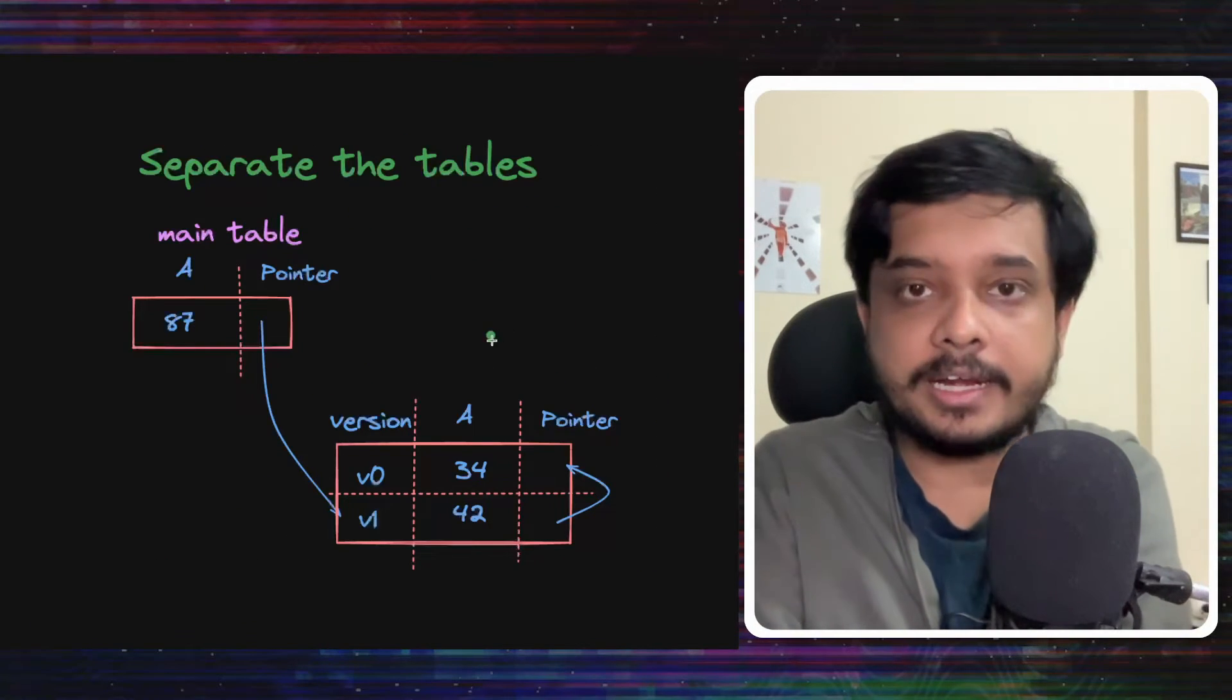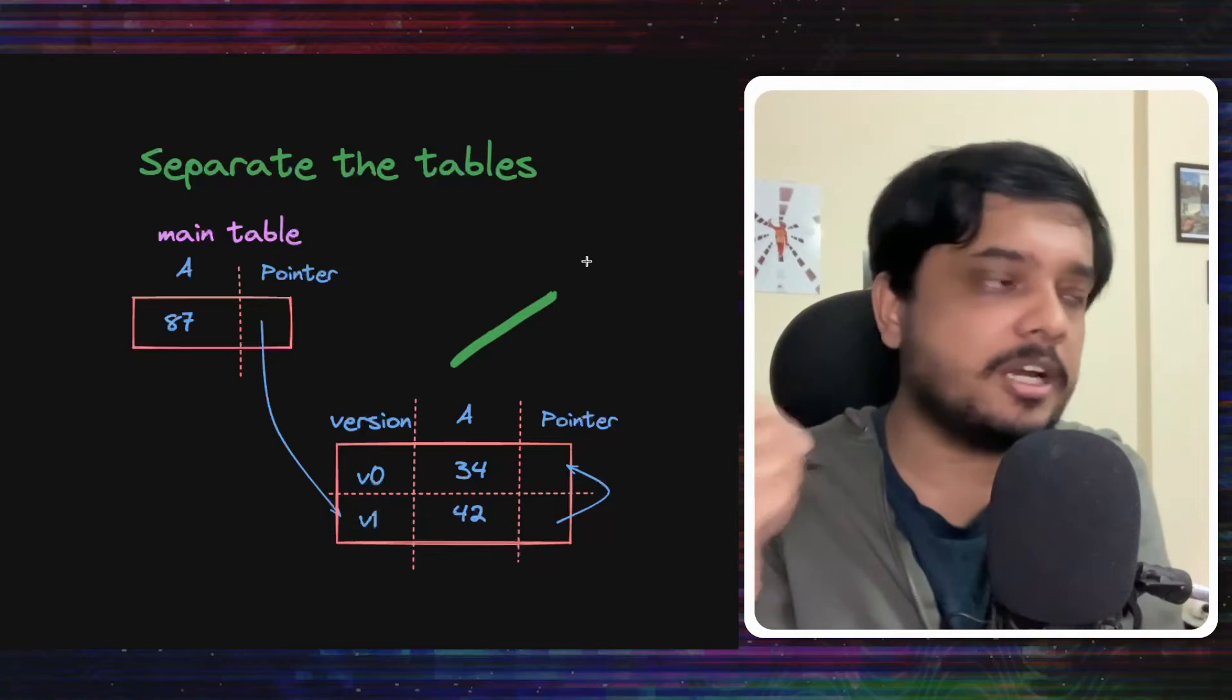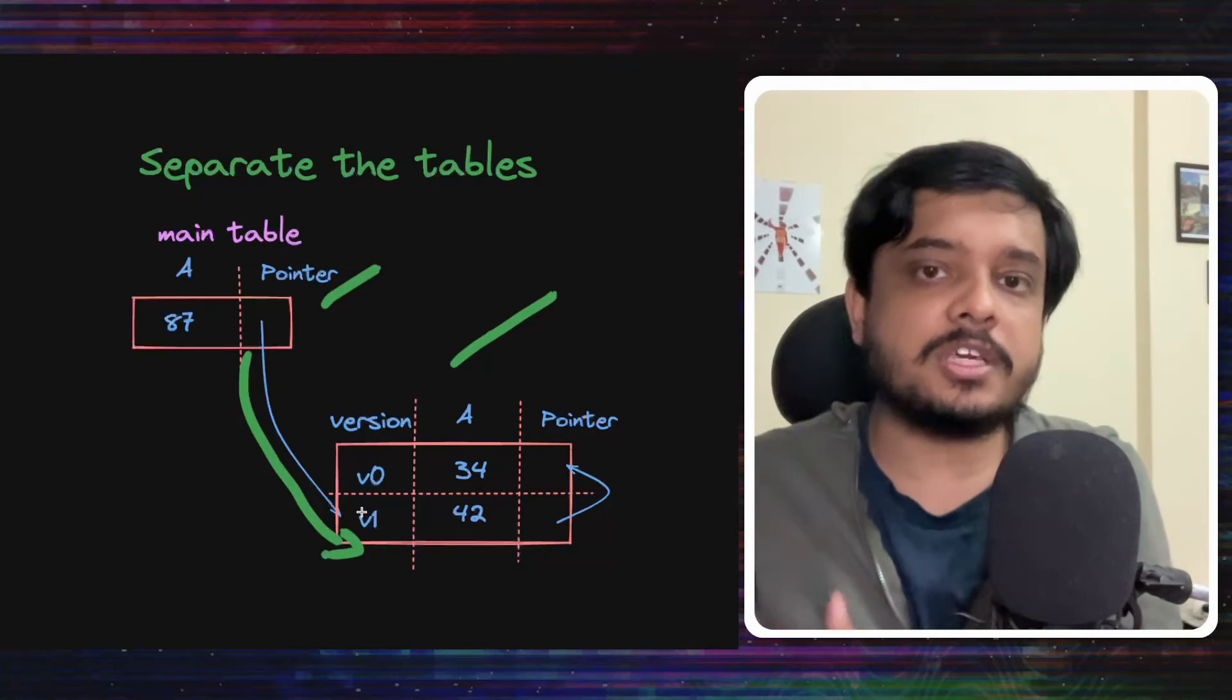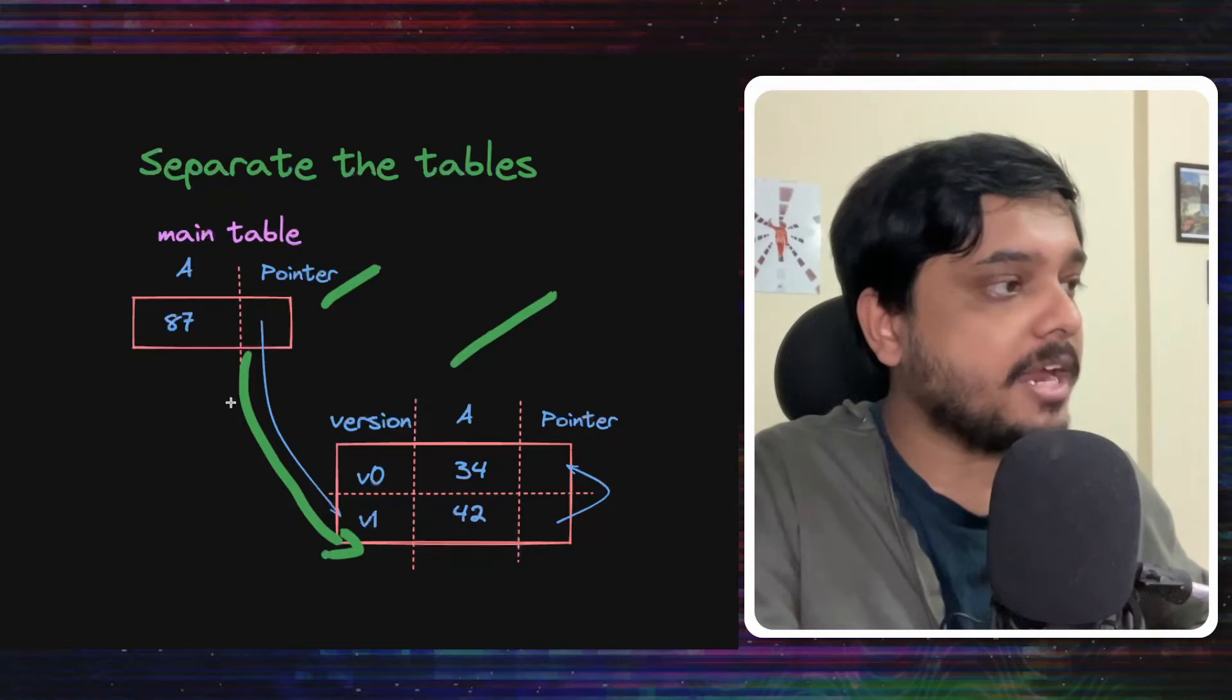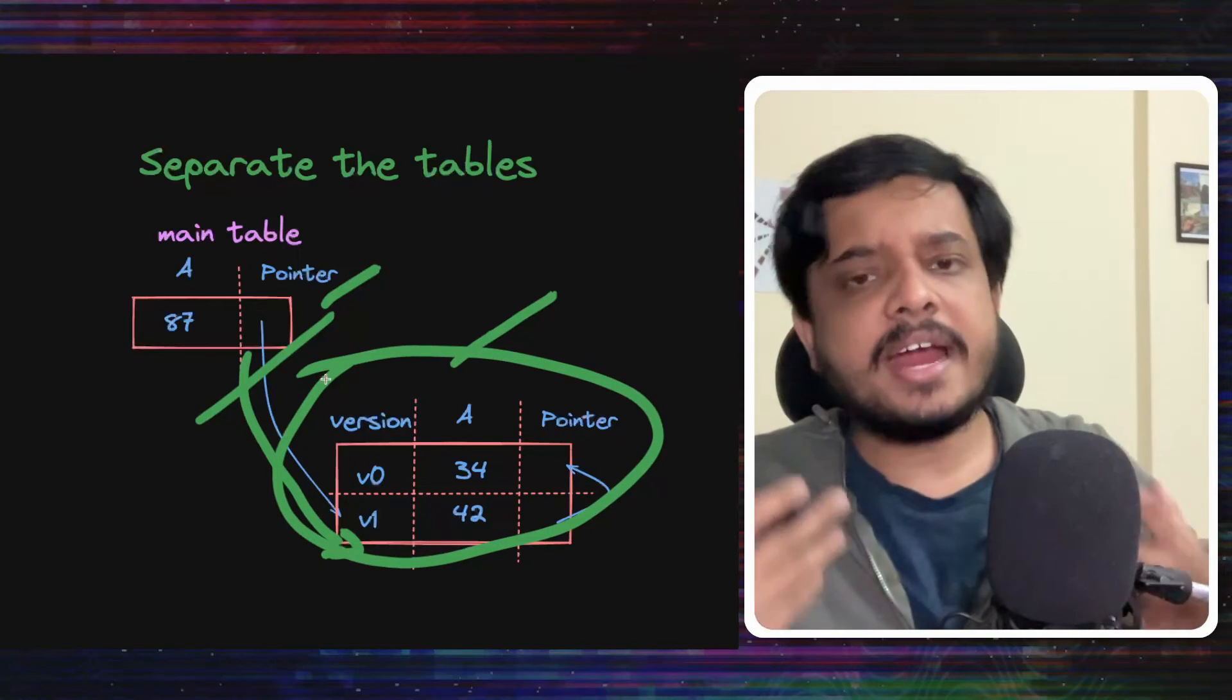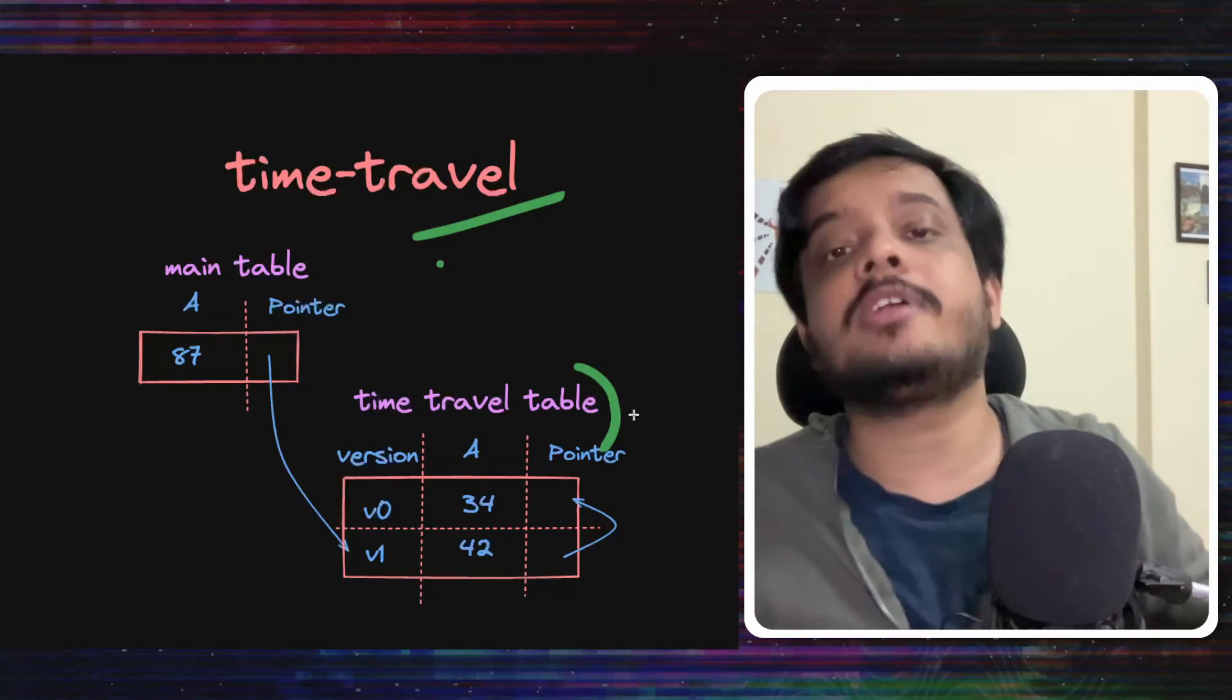What if we do something like this? We take the older data along with its links and put it on a separate table. The main table can have the latest data and there can be a pointer to the latest data of the older table. We still have that linked list structure, but spread across two tables now. So, we can put this main table on a faster, more expensive storage, and we can put this other table on a slower and a cheaper storage. This idea is called the time travel storage model. And this table you see right here is the time travel table.